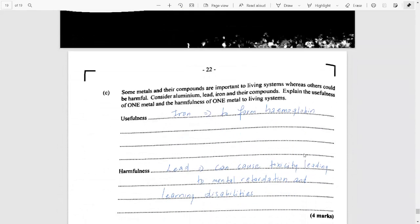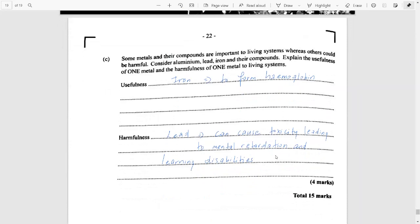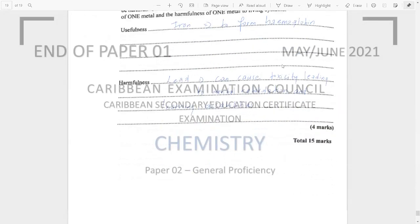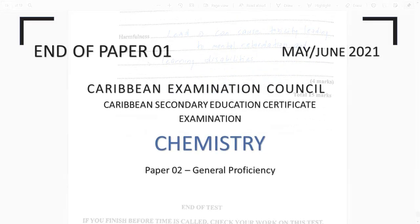And then finally, you were asked to show the usefulness of metals and metals that could harm you. So iron is definitely a useful metal that could be used to form hemoglobin. And lead is a toxic metal that can be poisonous to the nervous system, leading to mental retardation and learning disabilities. So that was your 2021 chemistry paper two exam.